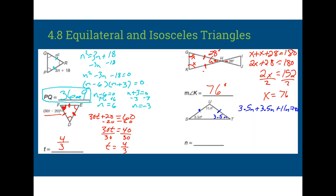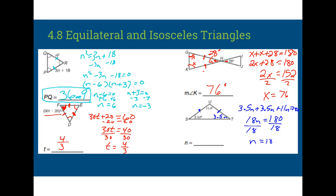3.5N plus 3.5N plus 11N is equal to 180. Combining like terms, adding 3.5 plus 3.5 is 7, plus 11 is 18. So I get 18N is equal to 180. Divide by 18, and we'll get N is equal to 10. Does not ask us to plug this answer back in. So all I do is have to write my answer, N equals 10.